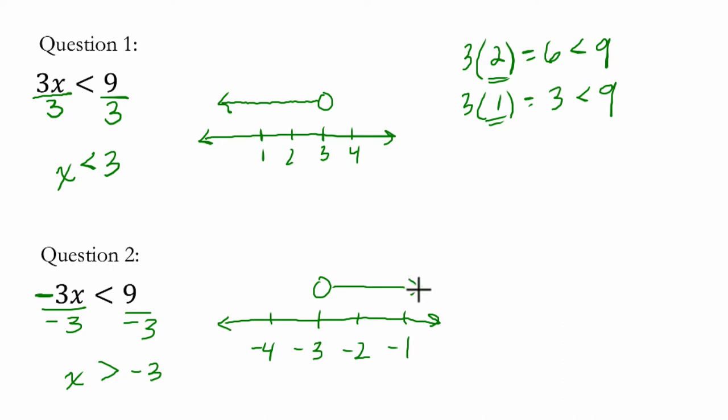So for example, here, x is bigger than negative 3. So we have negative 3 times negative 2, that's a value bigger than negative 3. We get positive 6, and that is less than 9.